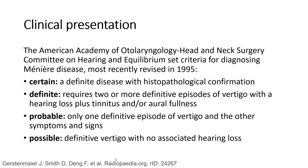The American Academy of Otolaryngology Head and Neck Surgery Committee on Hearing and Equilibrium set criteria for diagnosis of Meniere's Disease, most recently revised in 1995. Certain: histopathologically confirmed. Definite: two or more definitive episodes of vertigo with hearing loss plus tinnitus and/or aural fullness. Probable: only one definite episode of vertigo and other symptoms and signs. Possible: definitive vertigo with no associated hearing loss.